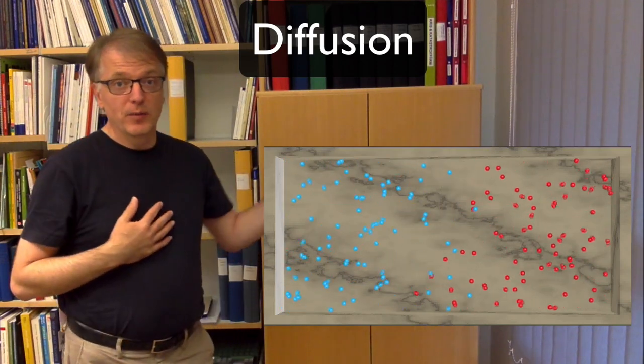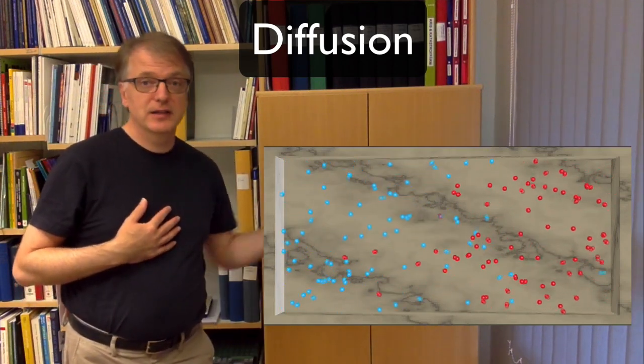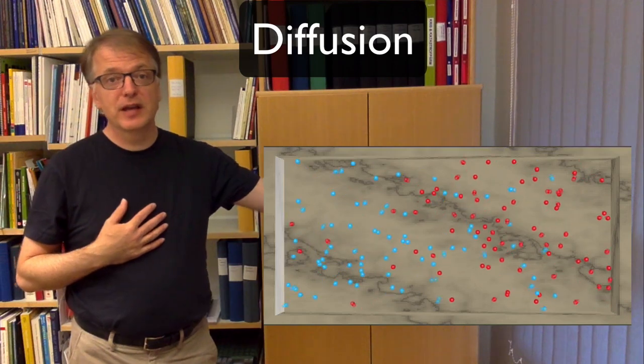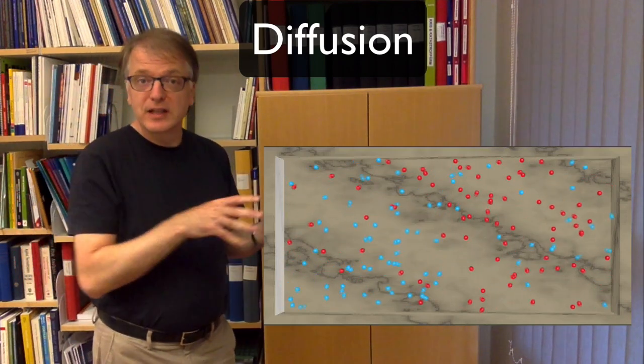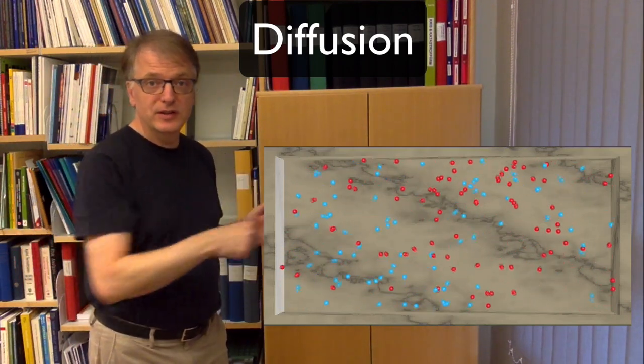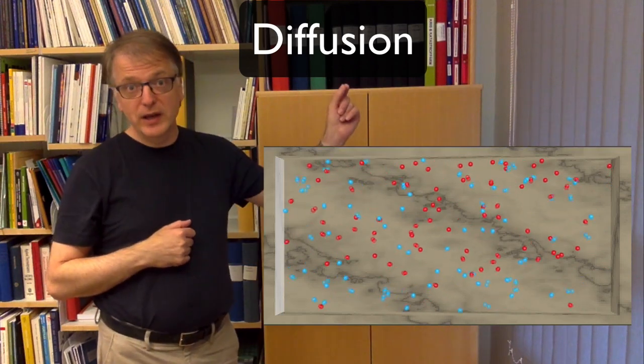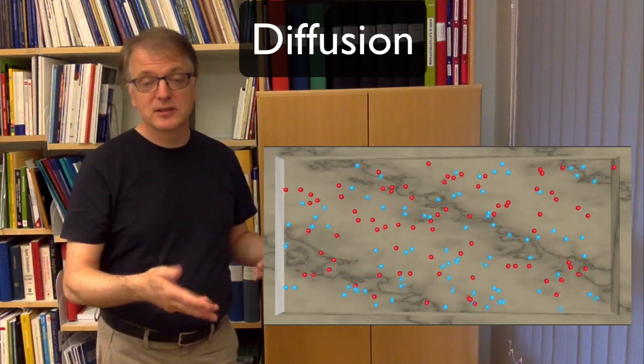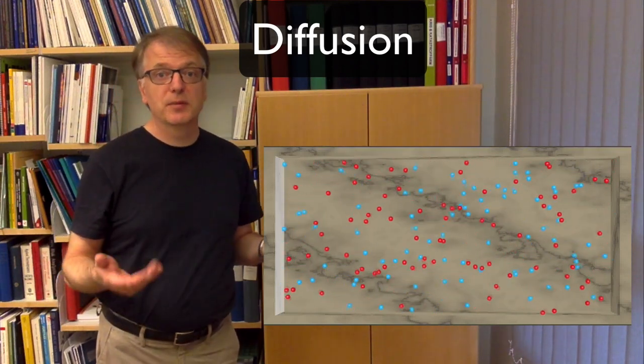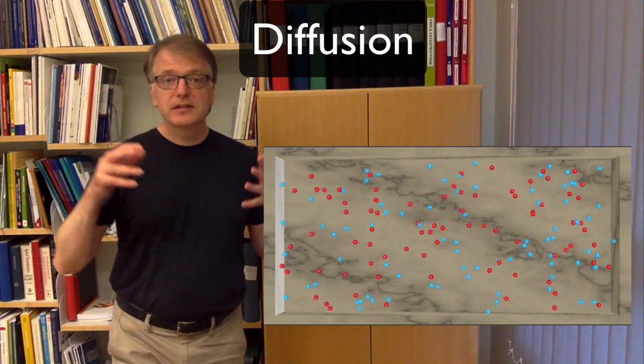And if we have blue molecules of a gas here and red molecules of another gas there, you see that they move around and there's a barrier here. But if we take away that barrier, they will mix spontaneously because of this Brownian motion. And that's diffusion.